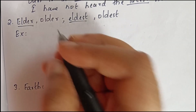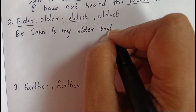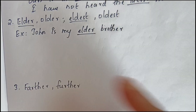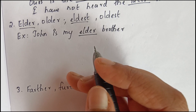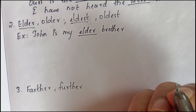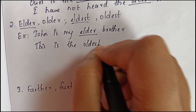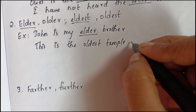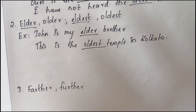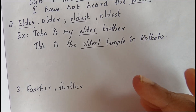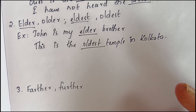For example: 'John is my elder brother' — elder is used to compare persons of the same family. Elder cannot be used for things or animals; it can only be used for persons. We can say 'This is the oldest temple' — oldest can be used with things, animals, or anything.